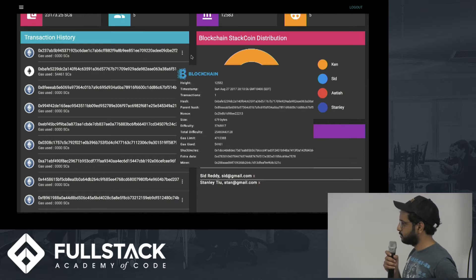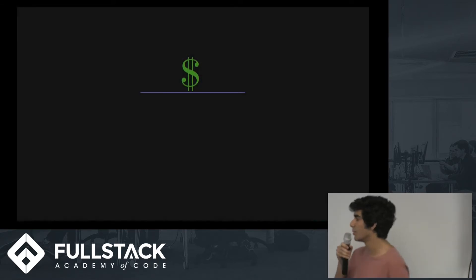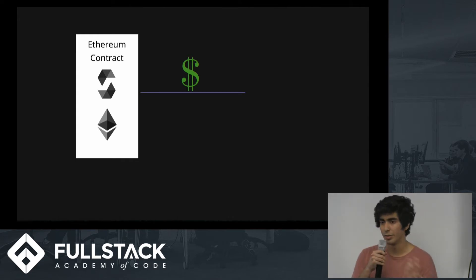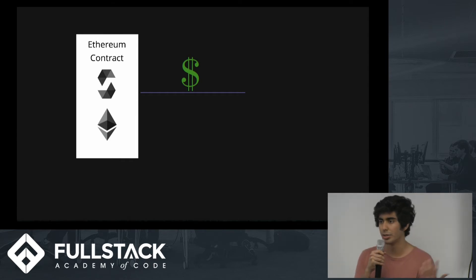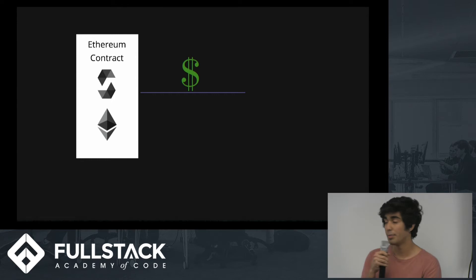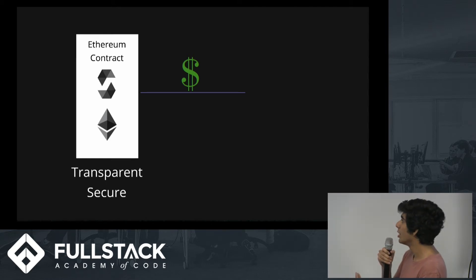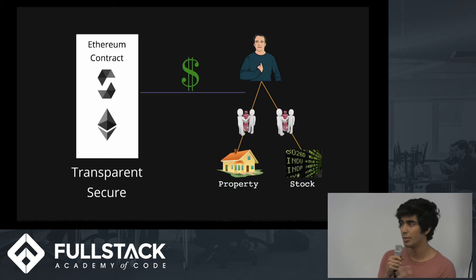More about transactions will come from Atish. Transactions happen when there's an exchange of StackCoin in our system, and the inner logic of these transactions happens using Ethereum smart contracts, which we code with the Solidity programming language. What makes transactions so great with smart contracts is that they're both transparent and secure, and the security prevents any fraudulent transactions from occurring. There's also a huge ease of use — you can buy property, shares, stock, and money with no middleman. It's one-to-one, peer-to-peer.